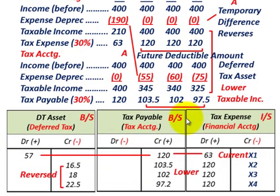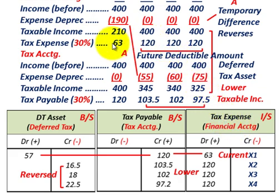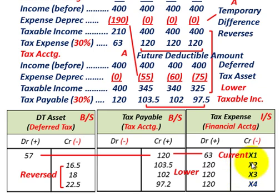Now let's look at how we record this. We need to set up a deferred tax asset, a tax payable account, and a tax expense account. Tax expense appears on the income statement under financial accounting. For year X1, we debit tax expense for $63,000, and for each of years X2 through X4 we debit tax expense for $120,000.